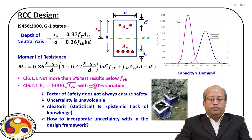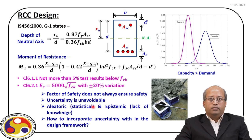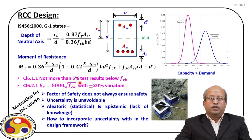The reason is the uncertainty that is always present is unavoidable and hence we have to consider it within the design framework. Now, uncertainty can be of different types — it may be quantified in statistical terms, or sometimes it also originates due to lack of knowledge. In this course, we will try to incorporate the uncertainties which can be quantified using statistical terms within the design framework, and this actually motivates us to take this course.